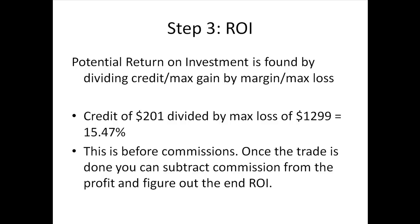So basically there are three steps: step one, find the credit; step two, find the max loss; step three, divide the credit by the max loss to get your potential ROI. I hope this short video made sense. If you have any questions, feel free to email and we'll answer via email or in another video. Thanks a lot, happy trading, and hope to see you at optiongenius.com.